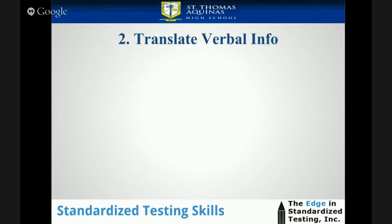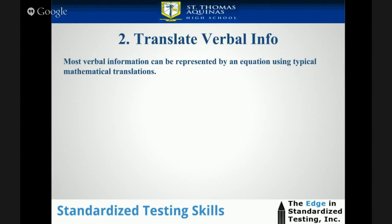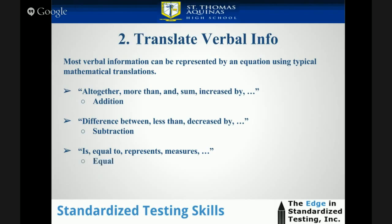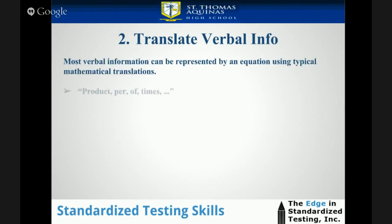Step 2 is translating verbal information. Most verbal information can be represented by an equation using typical mathematical translations. For example: 'altogether,' 'more than,' 'and,' 'sum,' 'increased by' really means addition. 'Difference between,' 'less than,' 'decreased by' really means subtraction. 'Is,' 'equal to,' 'represents,' 'measures' really means equal. 'Product,' 'per,' 'of,' 'times' means multiplication.